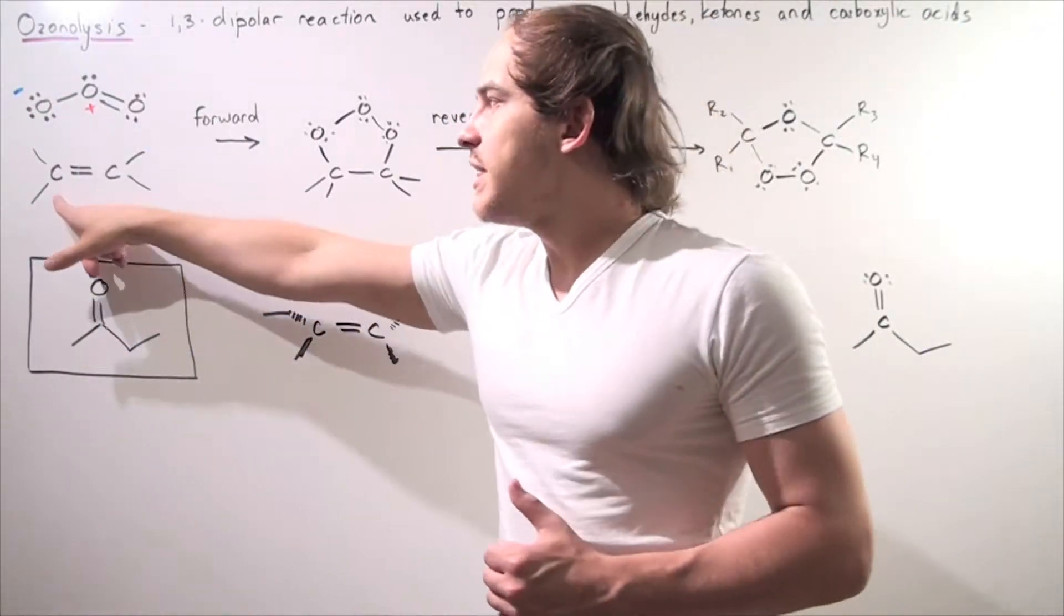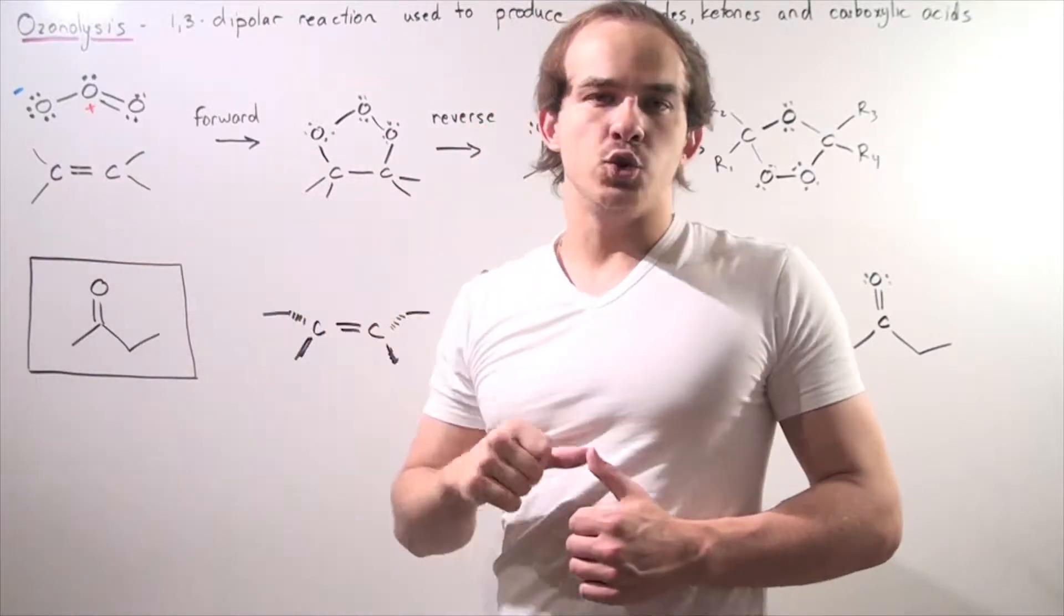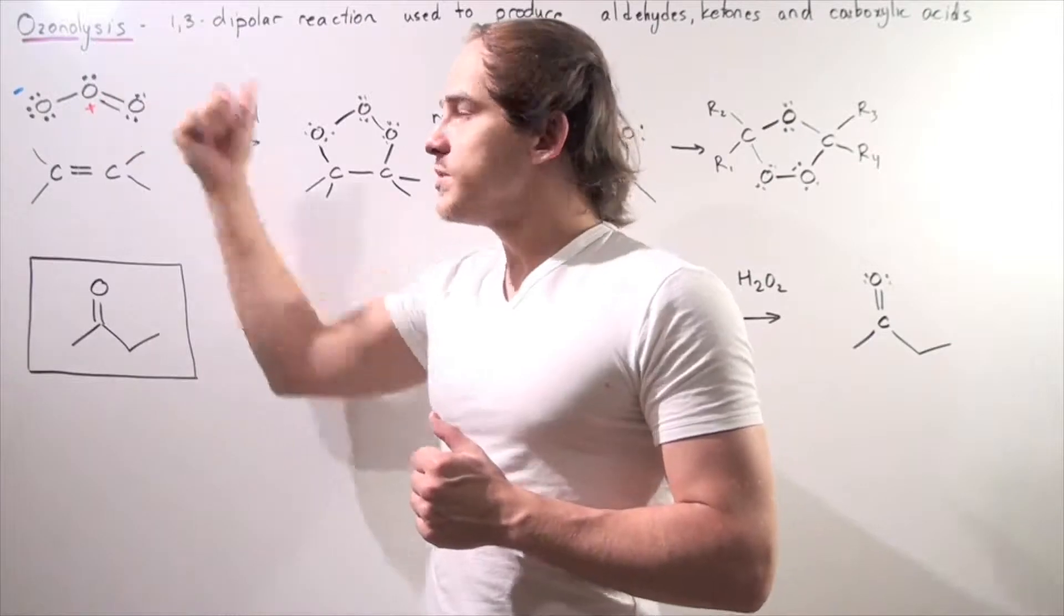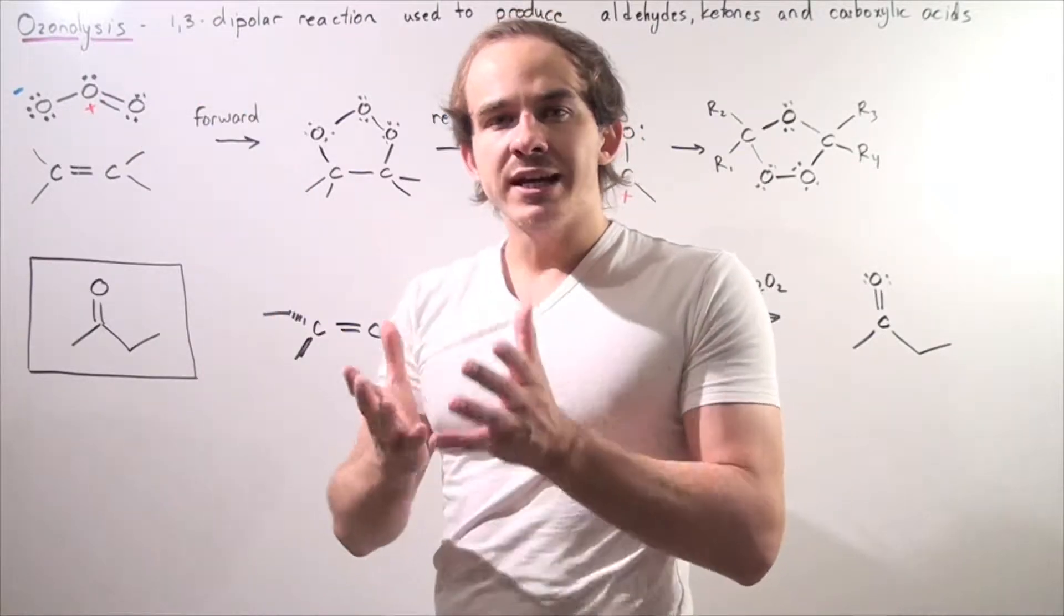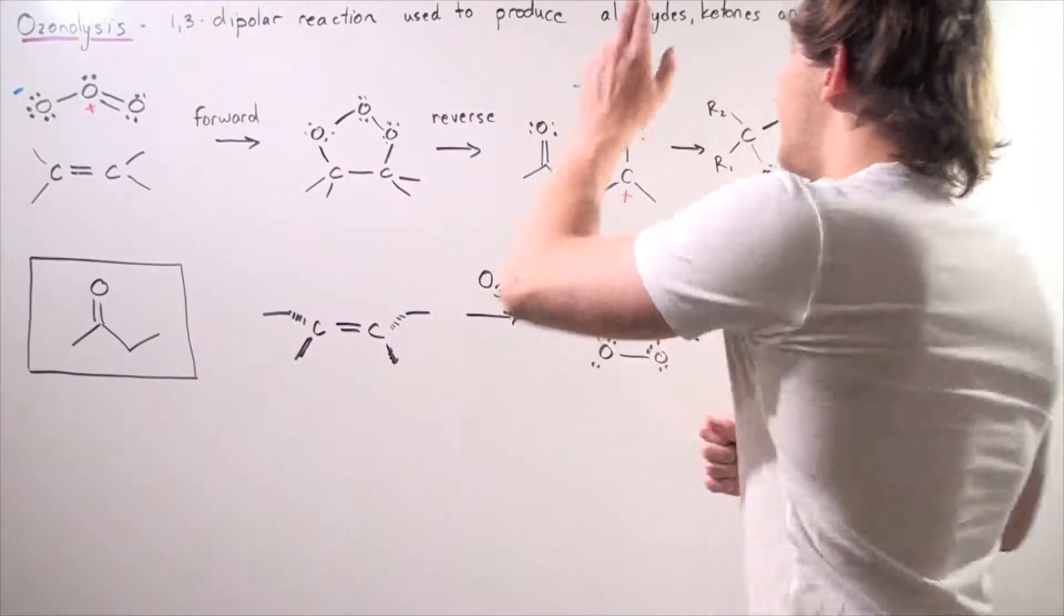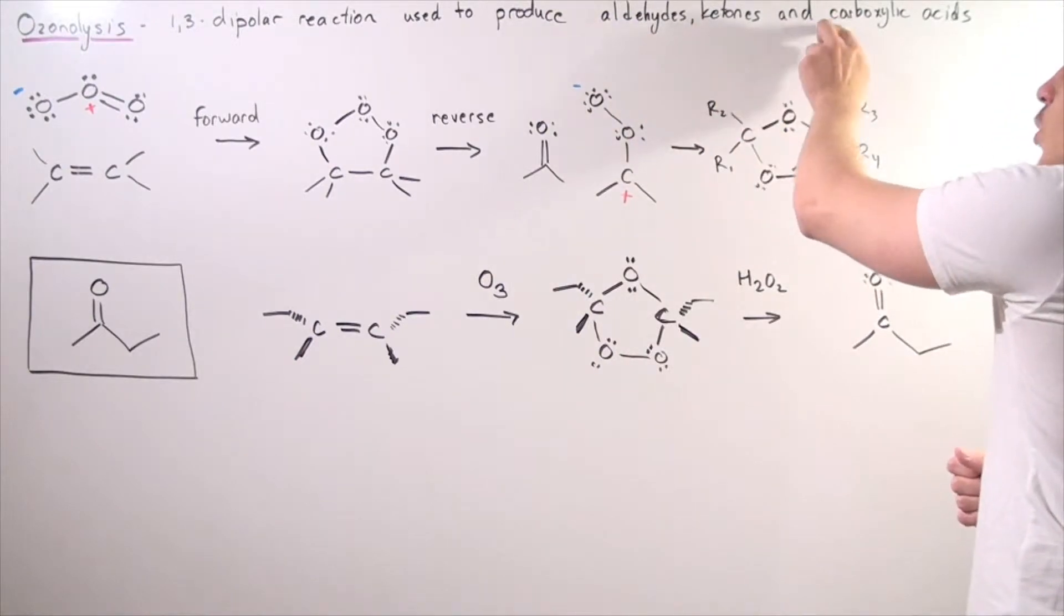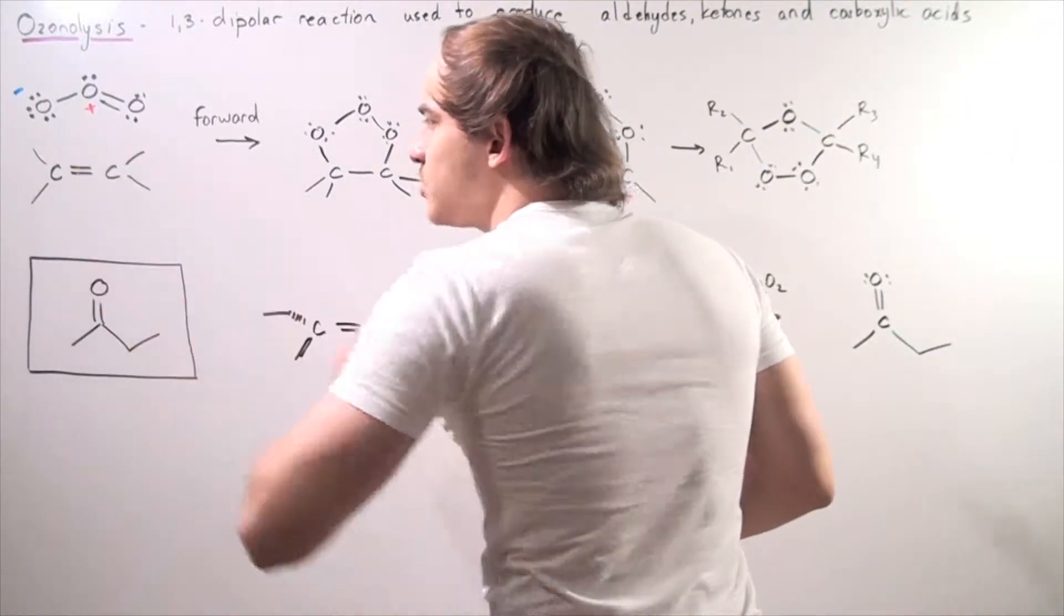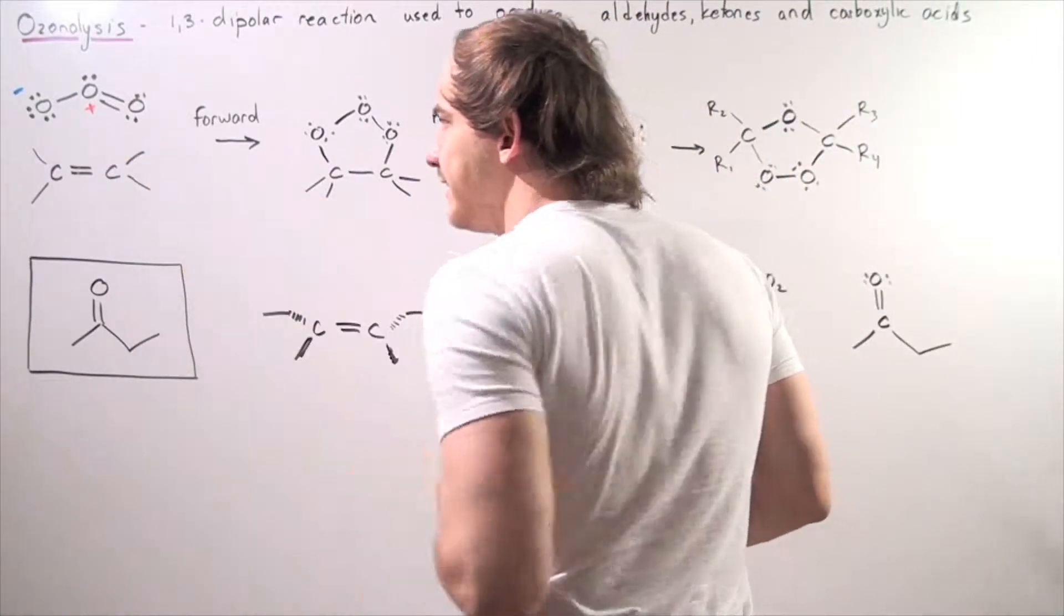So a molecule that has a double bond between two carbons. When we combine these two in the ozonolysis reaction, we can either form an aldehyde, a ketone, or a carboxylic acid depending on what this alkene is.